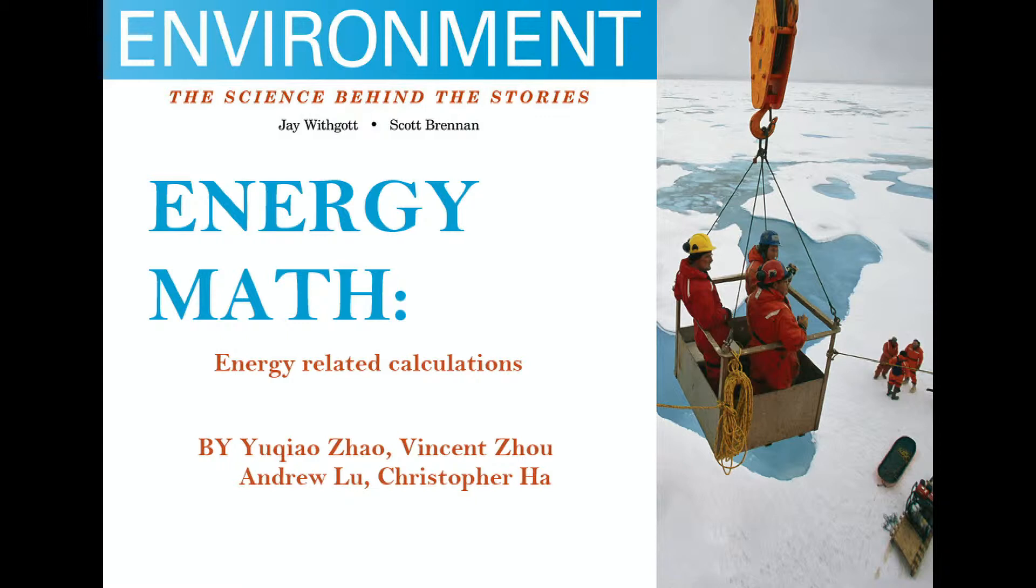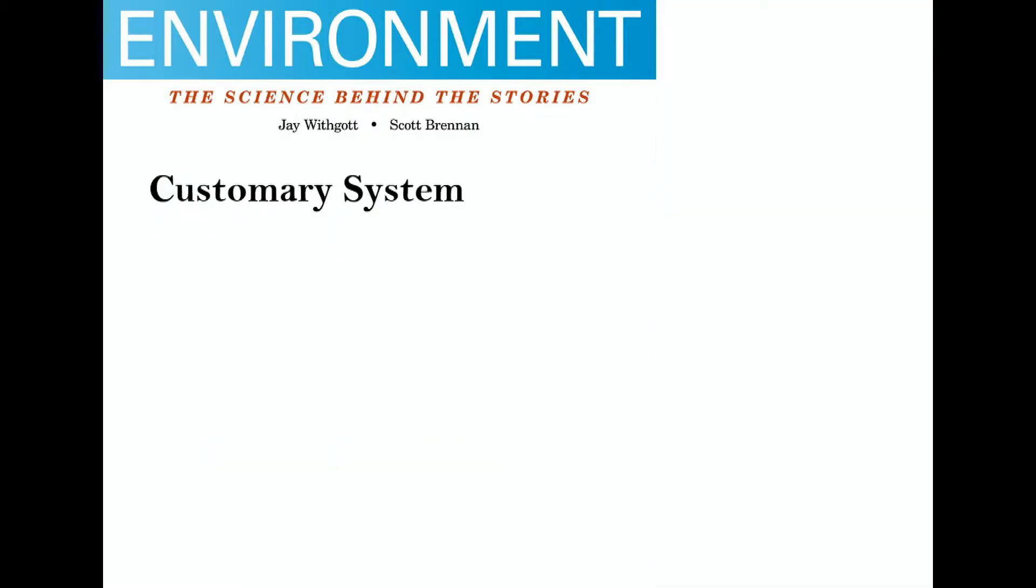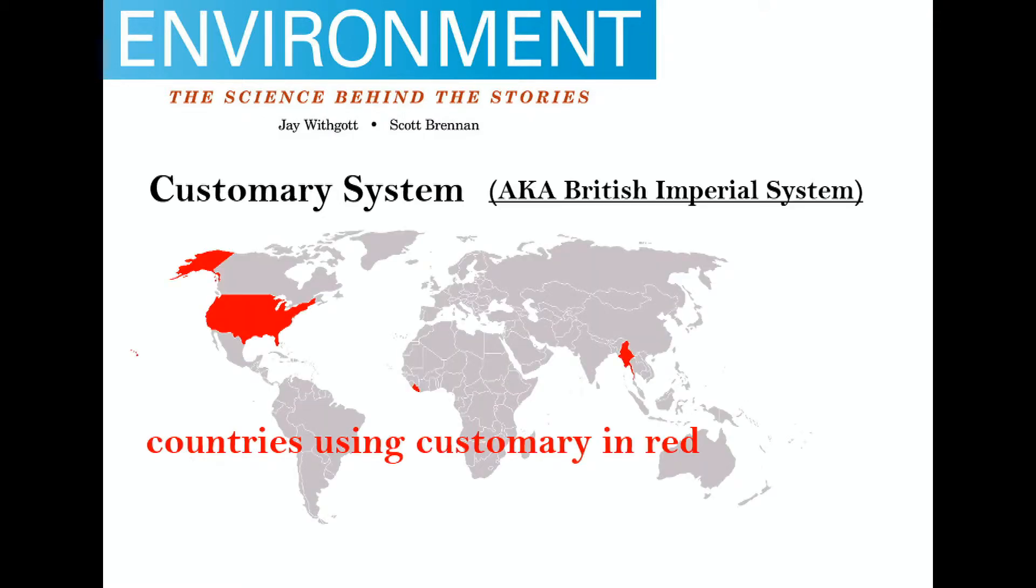There exist two main systems of measurement. One is the customary system and the other is the metric system. The customary system is used mainly in the USA and was originally regarded as the British system. It uses units such as feet and pounds.